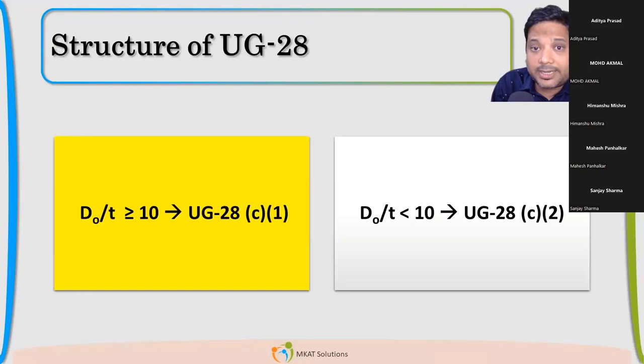Now your question will be that I am going to calculate the thickness of shell. If I don't know T, how I will be able to know that my D0 by T ratio is greater or less? For that, you have to choose one and then proceed, because external pressure thickness calculation is based on assumption of thickness.